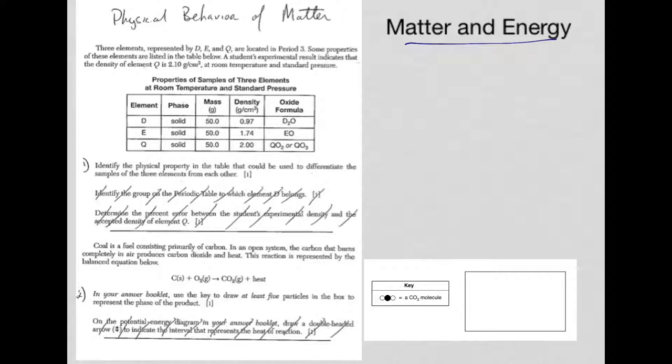For number one, we're looking to identify the physical property in the table so we can differentiate the three elements. Physical property, we know that's describing matter without chemical changes, so oxide formulas wouldn't be it. If I look at what remains, for phase and mass, they're all the same, so that can't differentiate. The only thing left is density, and that's my answer. Make sure you know what a physical and what a chemical property is.